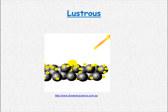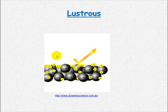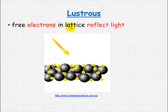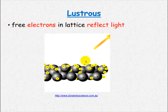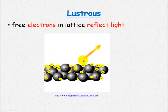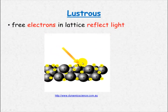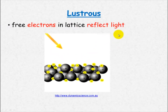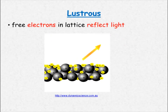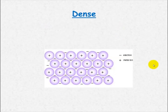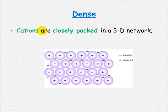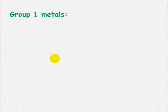Metals are lustrous. The reason they're lustrous is that the free electrons in the lattice can reflect light — the light bounces off, hits the free electrons, and is reflected. Metals are also dense, and this is because of the electrostatic attraction between the cations and the delocalized electrons.